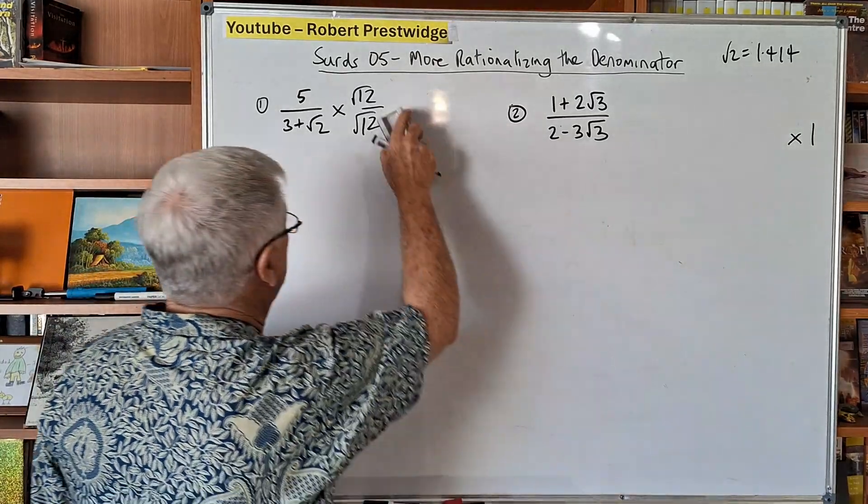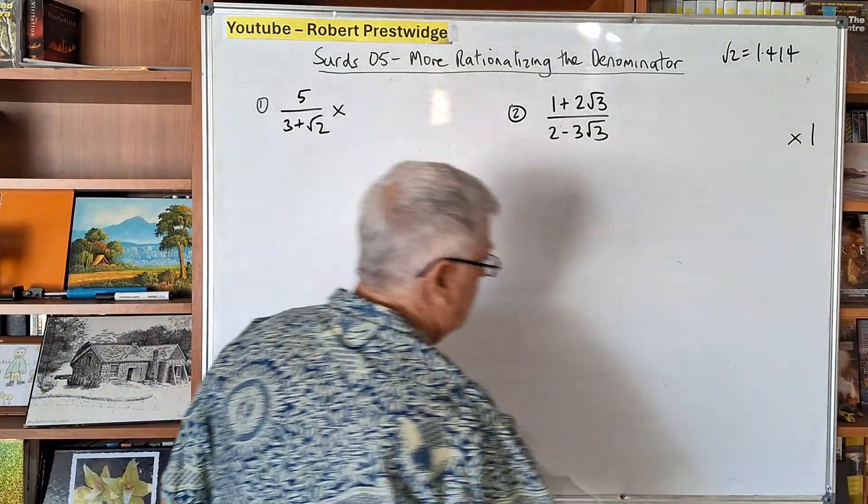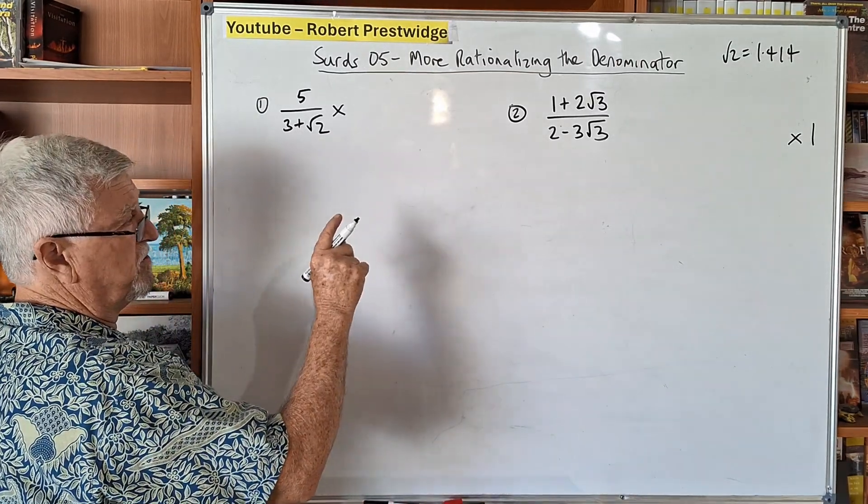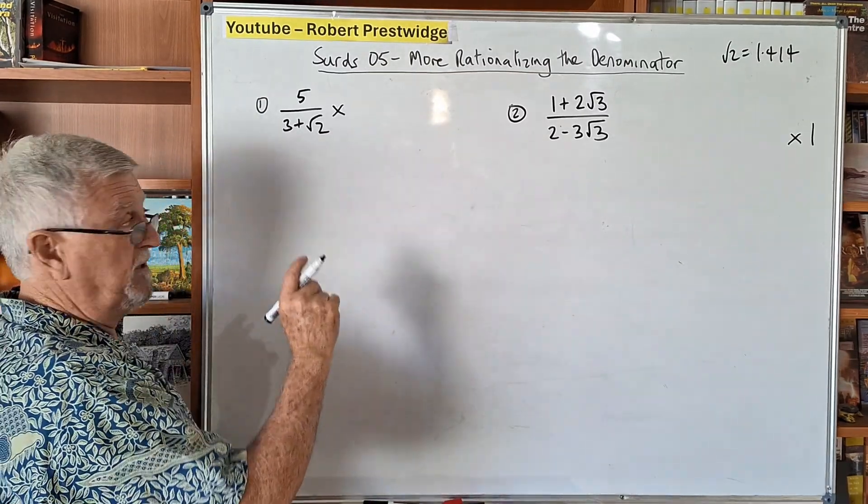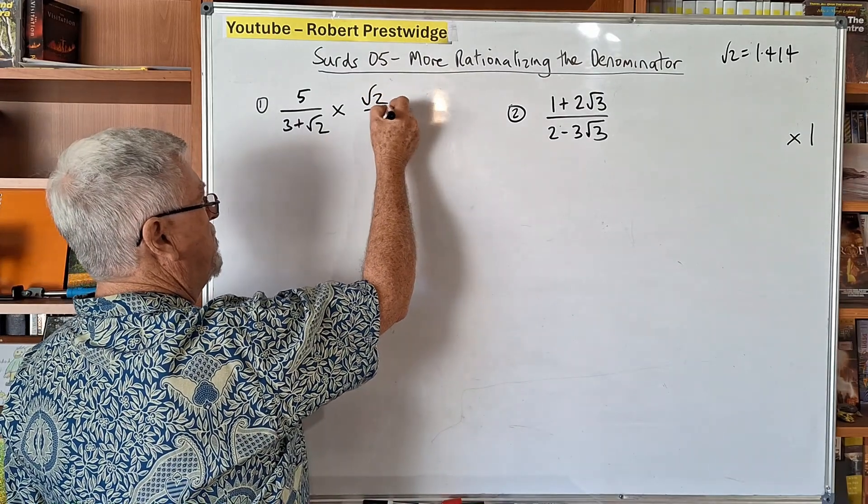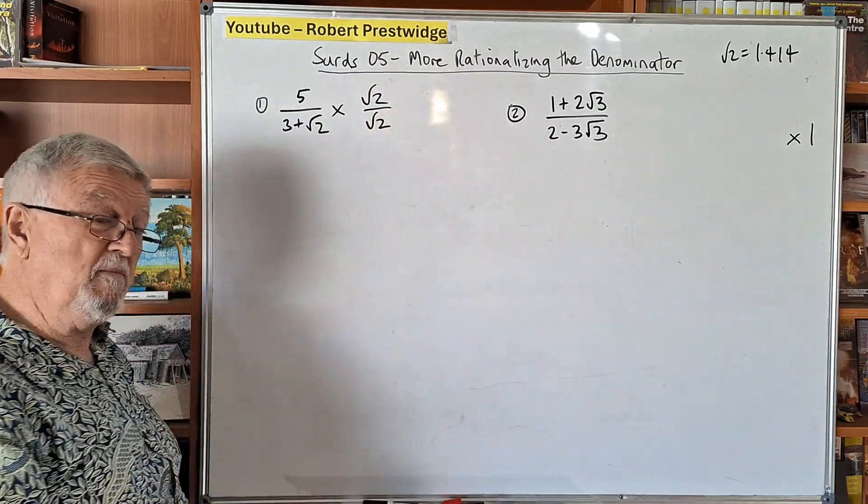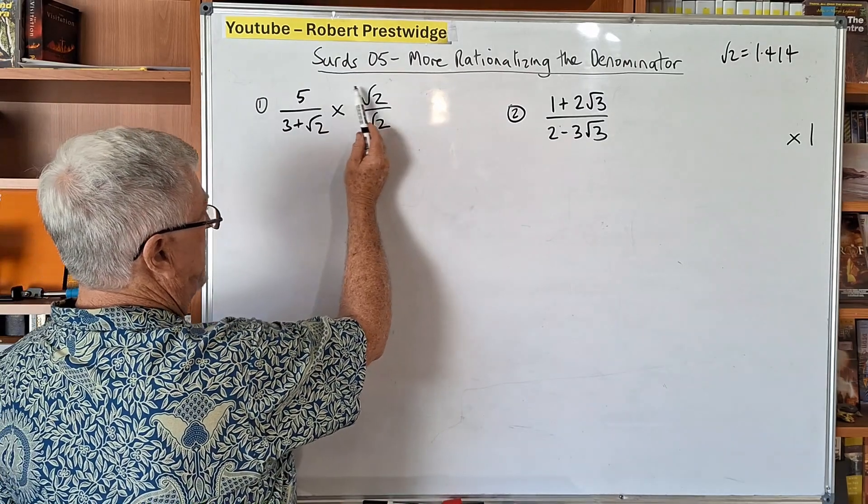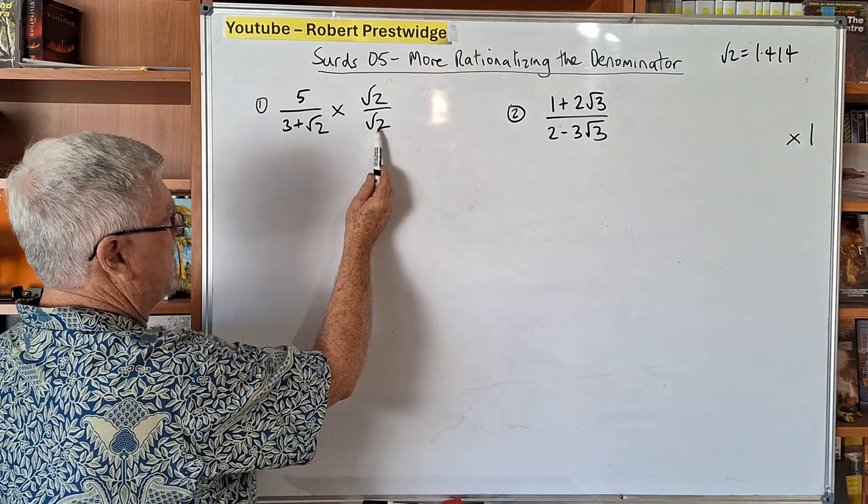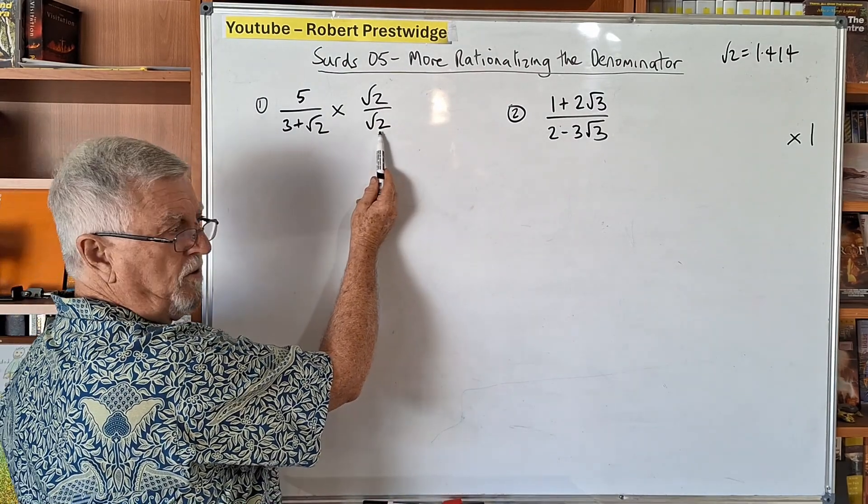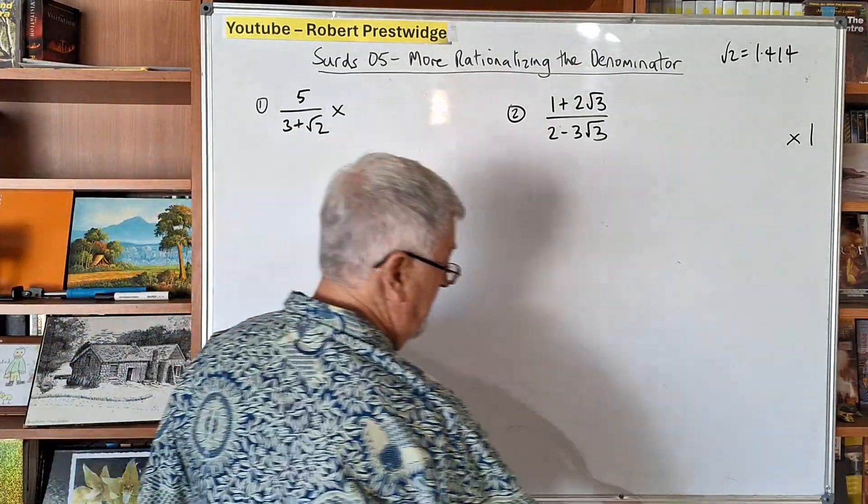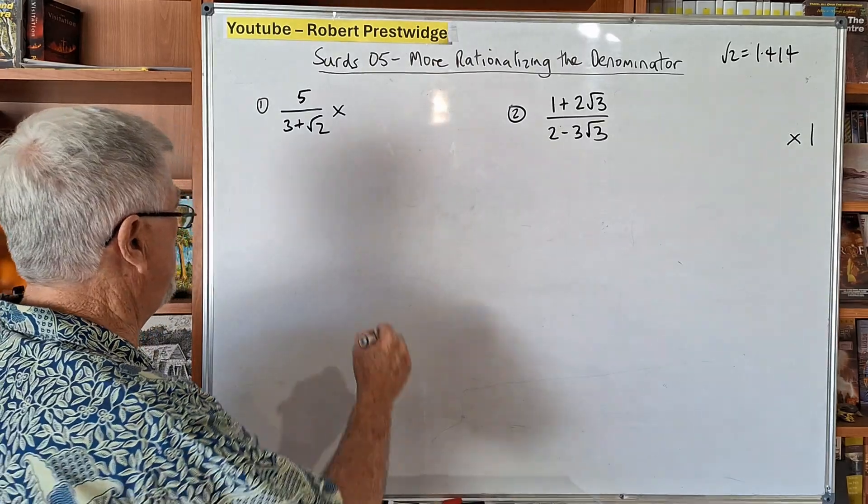Now it turns out with these questions, if you've looked at the previous videos or you already know how to do it, presumably because you should have known that. If I multiply that by root 2 over root 2, this will end up being 5 root 2 on the top. But this will end up being 3 root 2 on the bottom, and you don't get rid of that square root.